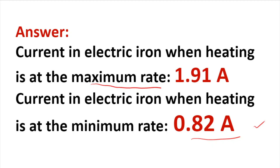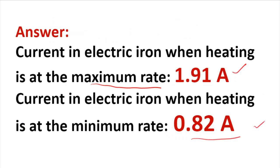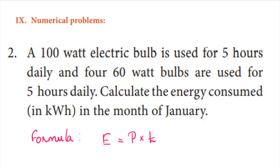As a tip: P is directly proportional to I, so the higher the power, the higher the current. That's why the current at maximum rate is higher than at minimum rate. This is a simple problem — using the formula P = V × I makes it easier to solve.